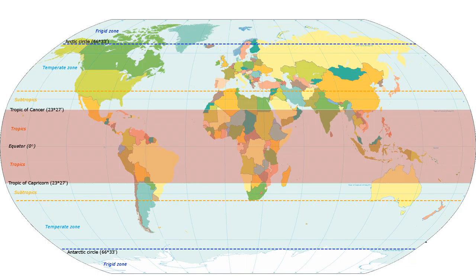Boreal climate or subarctic climate is a climate characterized by long, usually very cold winters, and short, cool to mild summers. It is found on large landmasses, away from the moderating effects of an ocean, generally at latitudes from 50 degrees to 70 degrees north, poleward of the humid continental climates.